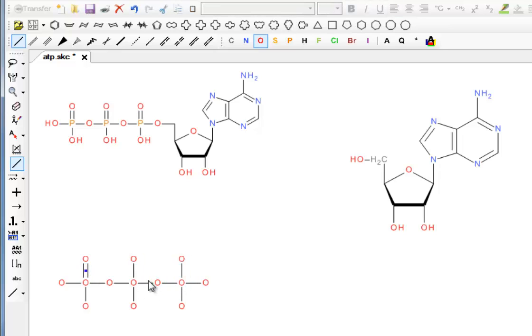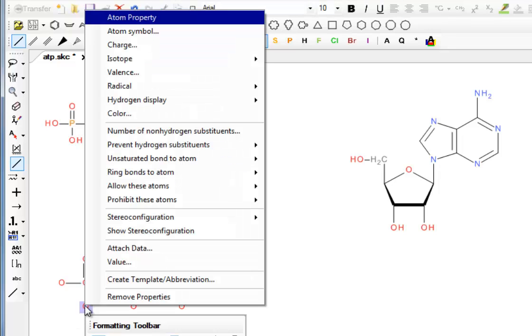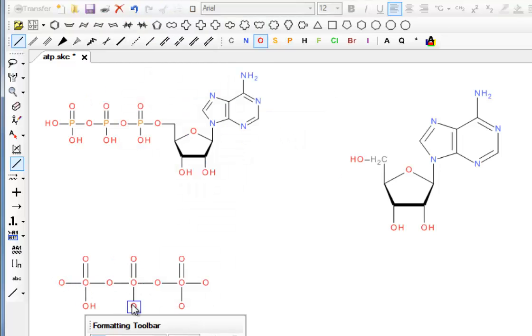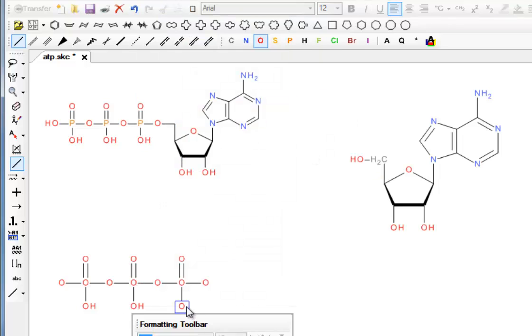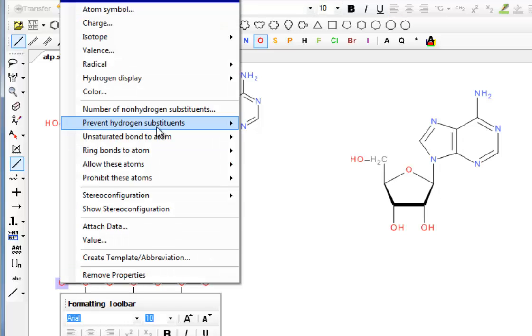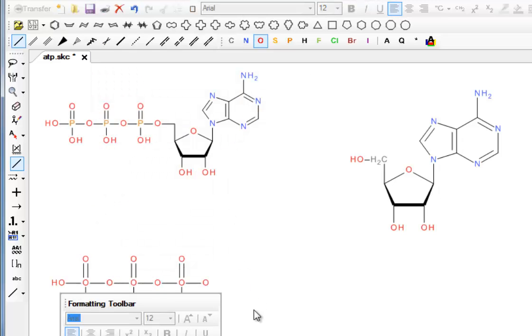We can easily change them to double bonds just by clicking once on the bonds. These we want to change to OHs in the usual way. And we've also got an OH here, so we do that by hydrogen display on auto again.